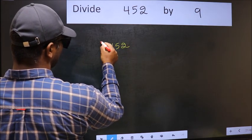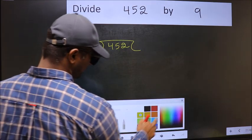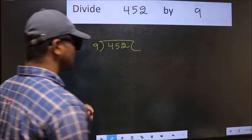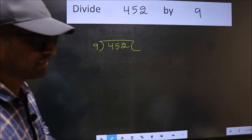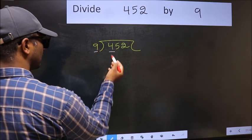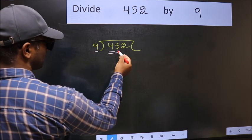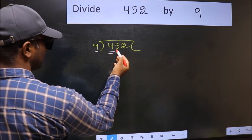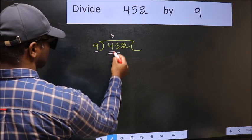452 and 9 here. This is your step 1. Next, here we have 4 and here 9. 4 is smaller than 9, so we should take two numbers, 45. When do we get 45 in the 9 table? 9 fives 45.